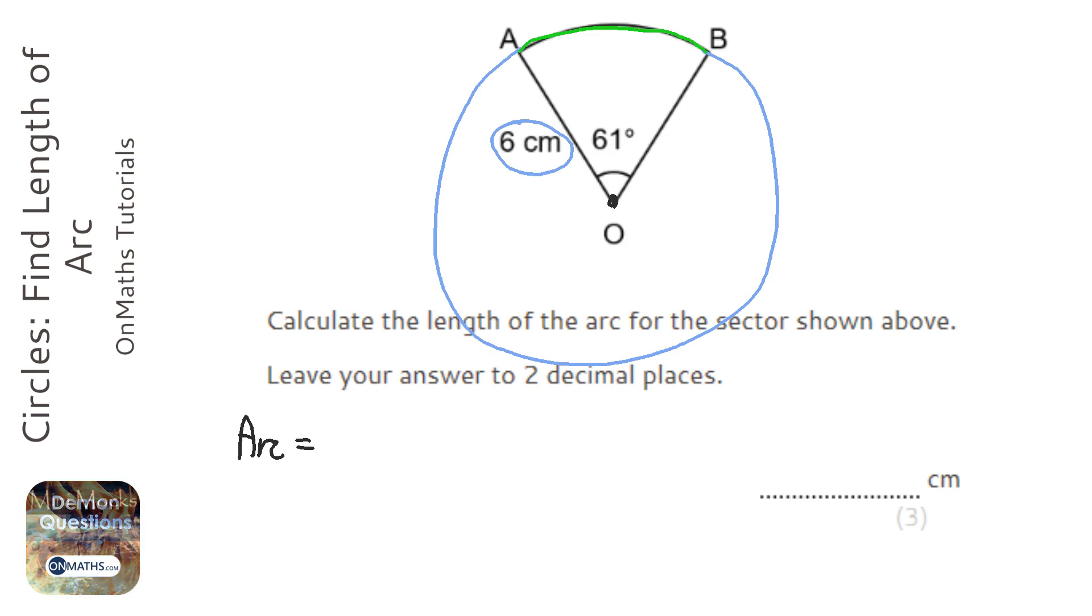So to work out the whole circumference, we need to do pi times the diameter. Now we're given the radius, so if the radius is 6, the diameter is going to be 12.